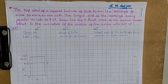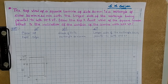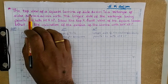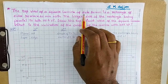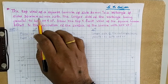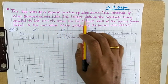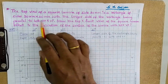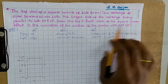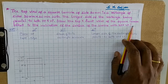Dear students, here in this video we are going to learn projections of plane surfaces. The problem is: the top view of a square lamina of side 30 mm is a rectangle of sides 30 mm × 20 mm, with the longer side of the rectangle being parallel to both HP and VP. Draw the top and front views of the square lamina. What is the inclination of the surface of the lamina with HP and VP?